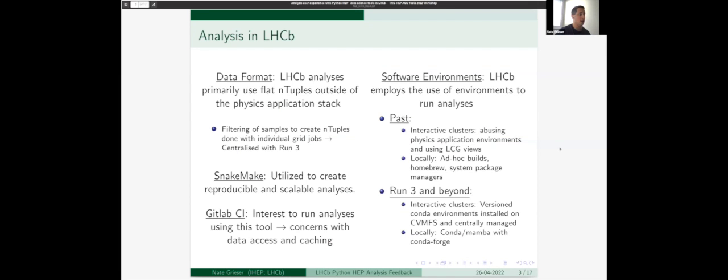I want to briefly overview the analysis in LHCb. Our data format is primarily using flat n-tuples outside of the physics application stack. These are filtered on samples to create n-tuples, done in the past with individual grid jobs from run one and run two. Moving into run three, this has now become centralized. Additionally, analyzers make use of snake make to create reproducible and scalable analyses. There's been some efforts with GitLab CI, however this comes with concerns about data access and caching, so this is still a work in progress.